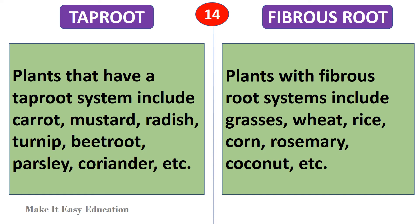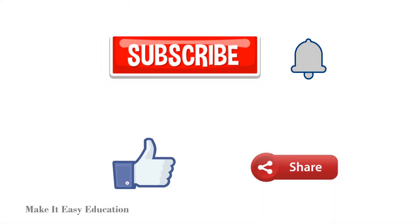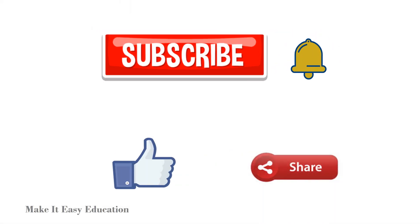Plants that have a taproot system include carrot, mustard, radish, turnip, beetroot, parsley, coriander, etc. Plants with fibrous root systems include grasses, wheat, rice, corn, rosemary, coconut, etc.